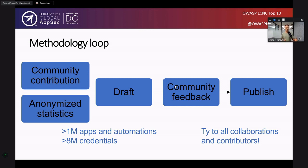You can see some numbers there about the applications and automations the project has had access to review or view statistics on. This produces a draft, which everyone can later comment on and provide feedback. Once all comments have been satisfied, this is published as the official version.